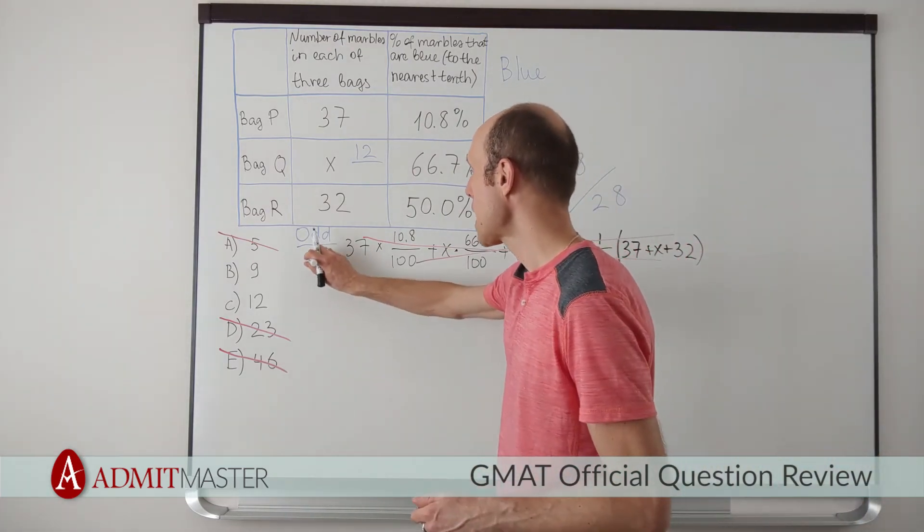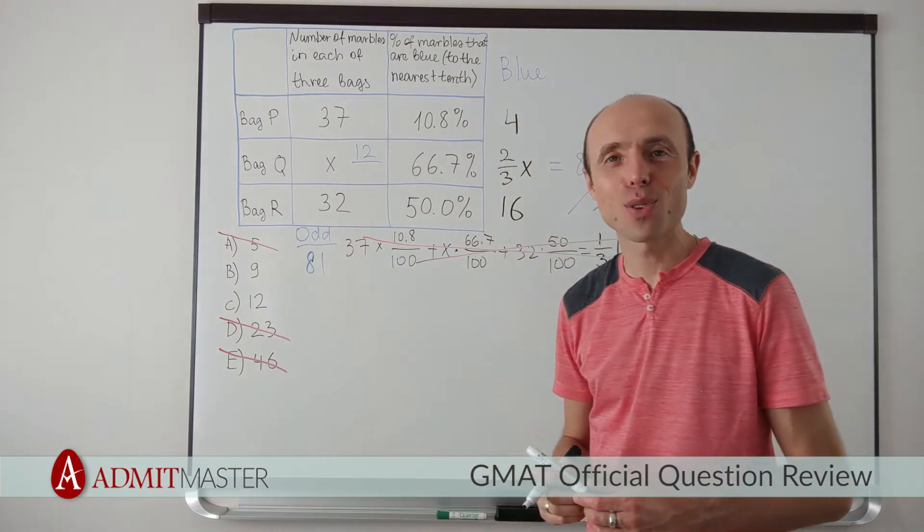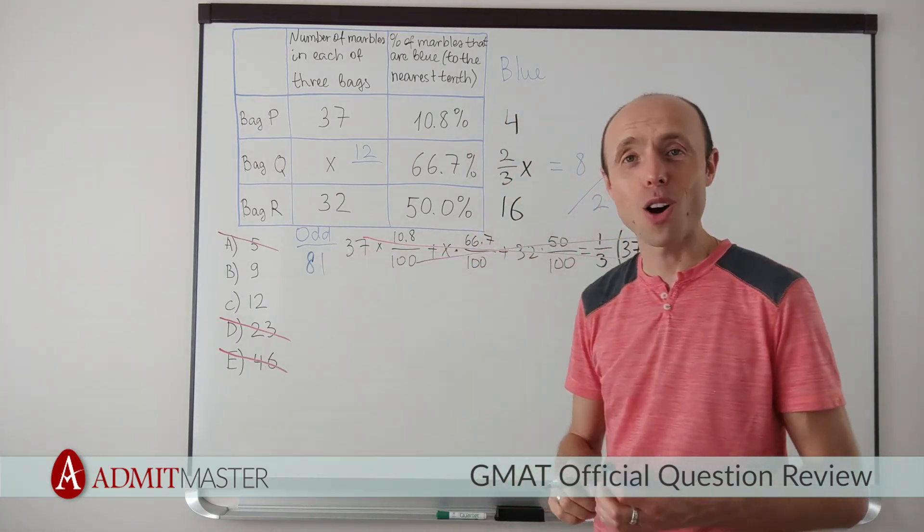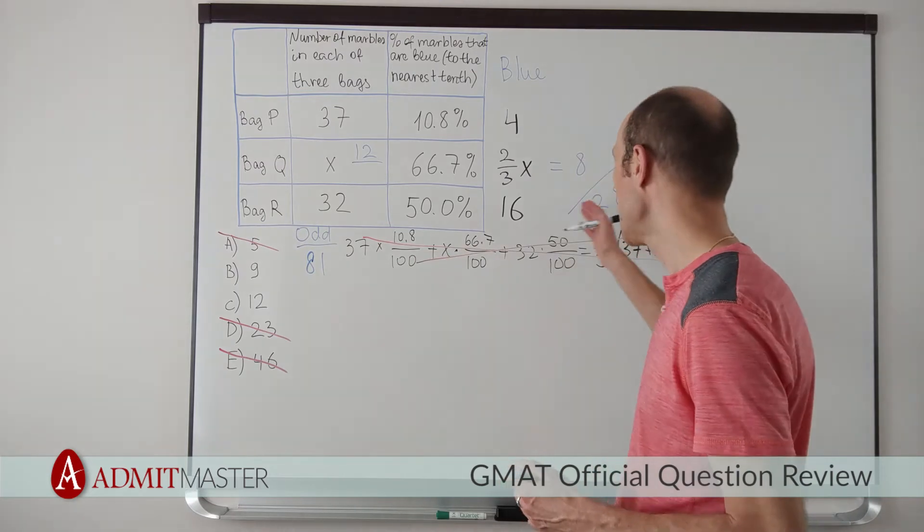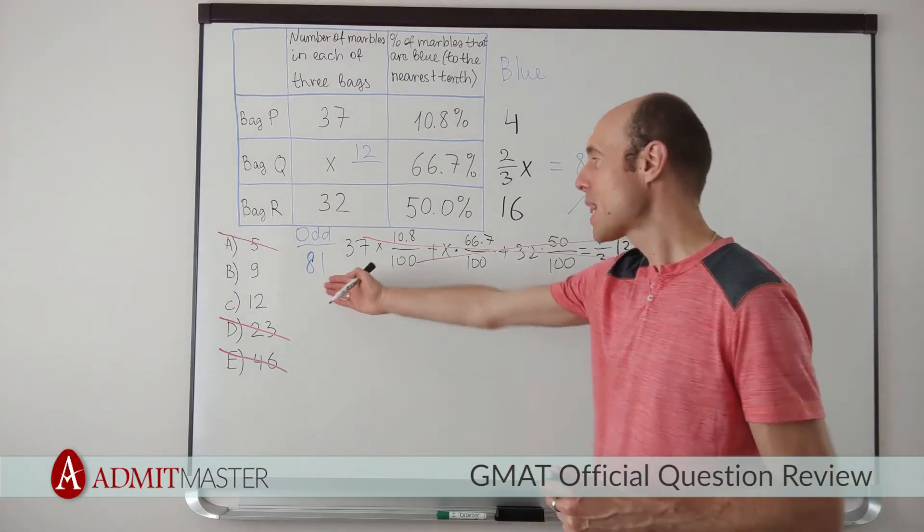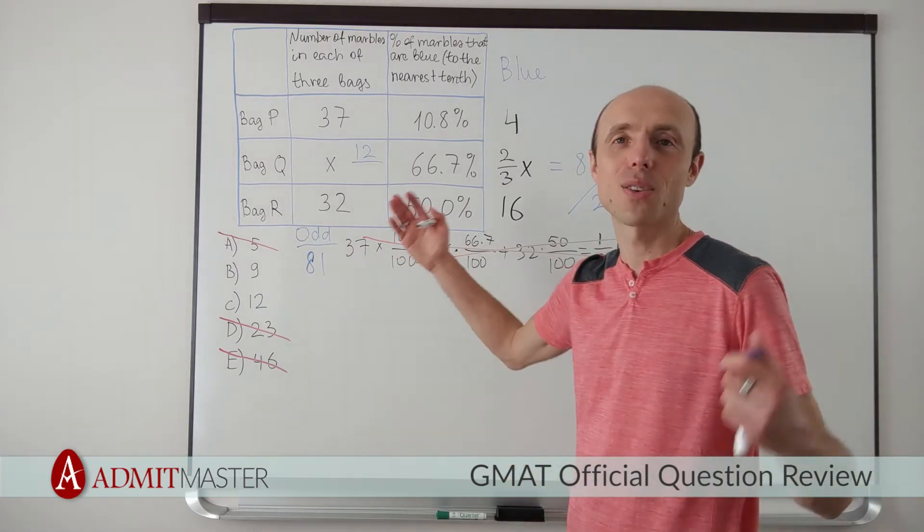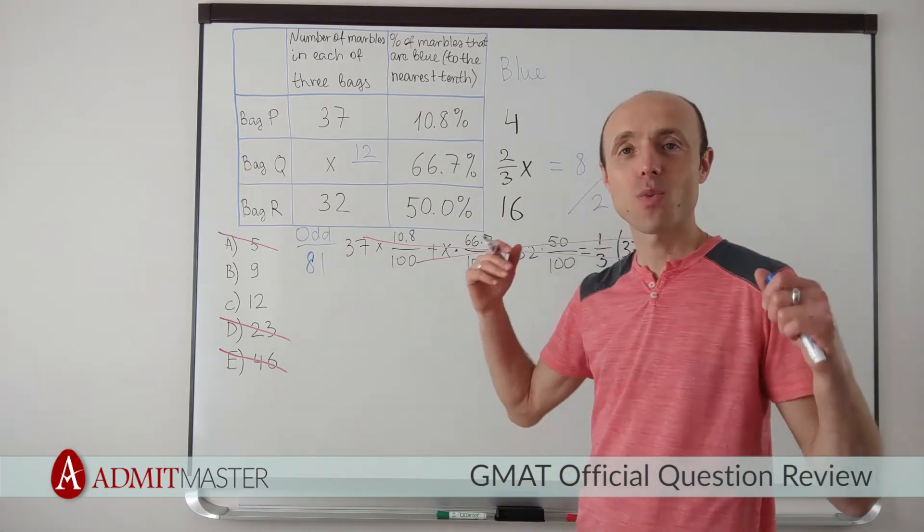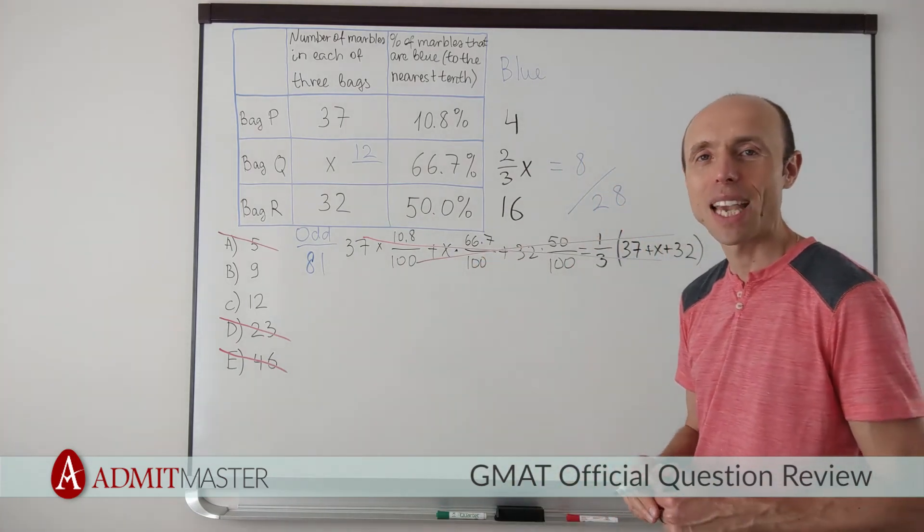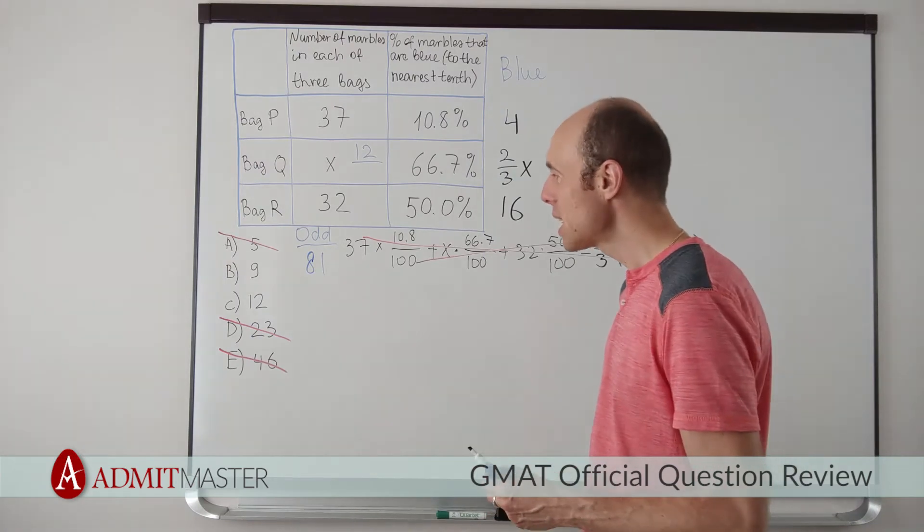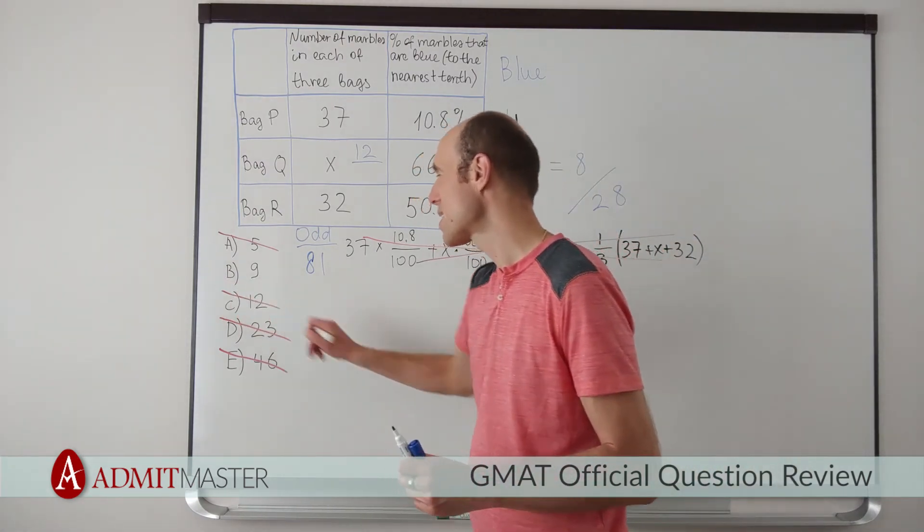So that number is 81. Again, we didn't really have to calculate it. We just figured it was an odd number, so divided by 3, it won't be 28. But now that you actually see the number, I think you can see by now that 81 divided by 3 is certainly not going to be 28. That is why C is not the right answer.